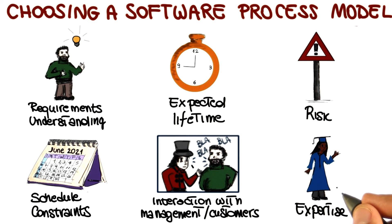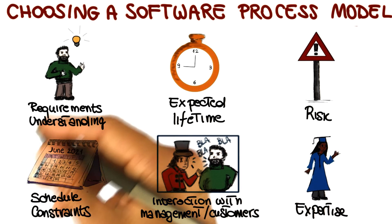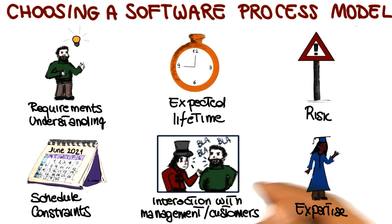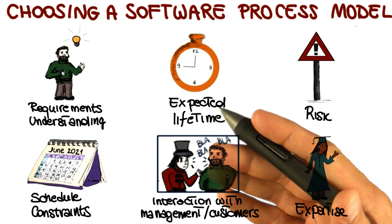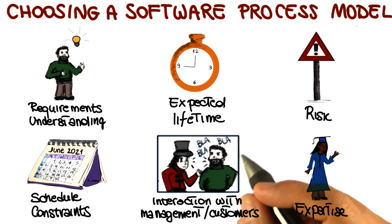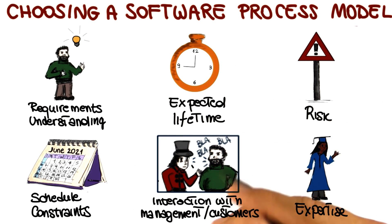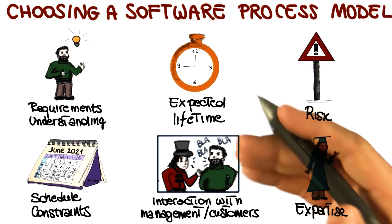So we need to take into account all of these aspects, and sometimes more, in order to be able to make the right decision and pick the right software process model for our project.